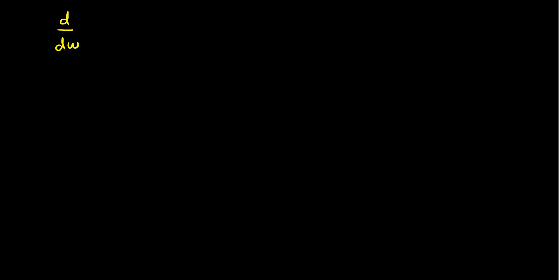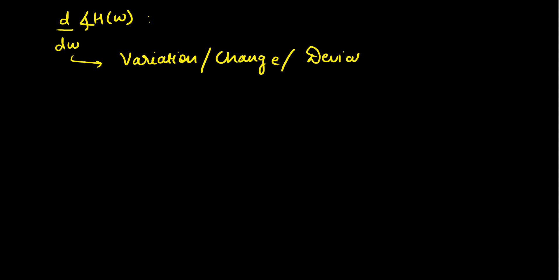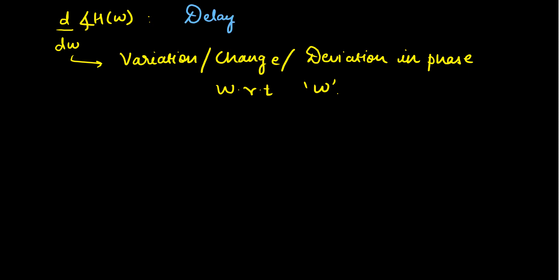Now let us go into depth and see some properties. If we consider the derivative of the angle or phase with respect to frequency omega — that is d/dω of the angle of H(ω) — this represents the rate of change of phase with respect to angular frequency, or in other words the variation in phase with respect to angular frequency omega. This derivative corresponds to the delay in the system, and this variation is minimum for minimum phase systems.